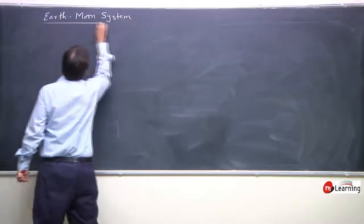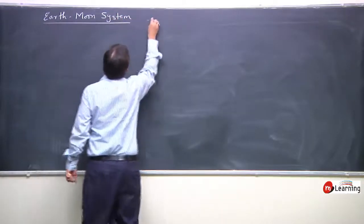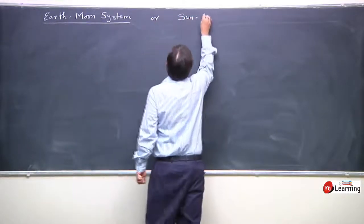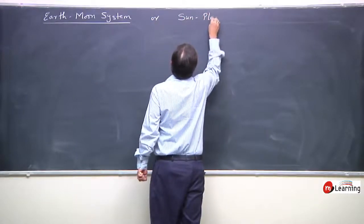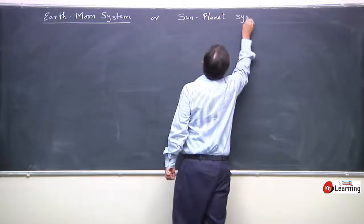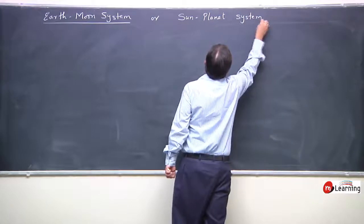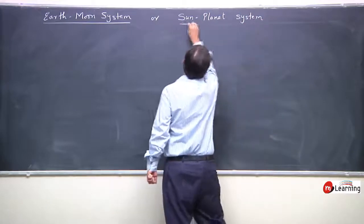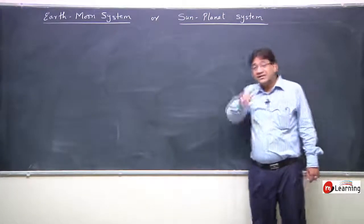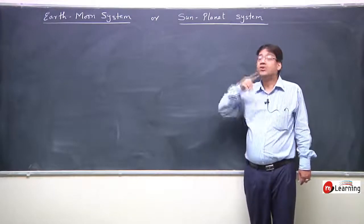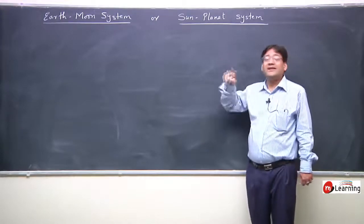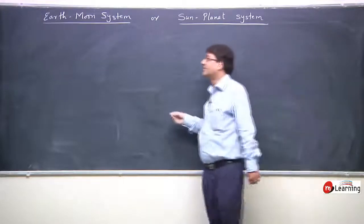Earth-Moon system, Sun, and Planet system. Earth के चारों तरफ Moon घूम रहा है और Sun के चारों तरफ Planet घूम रहा है.